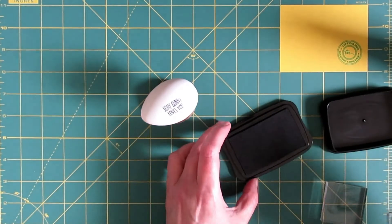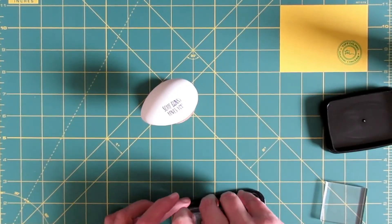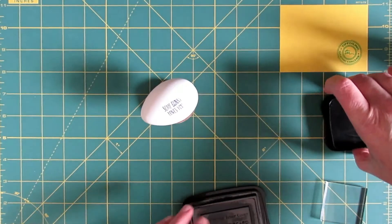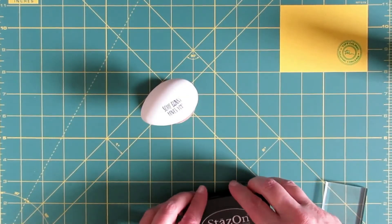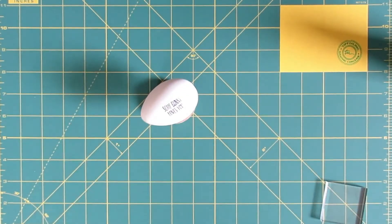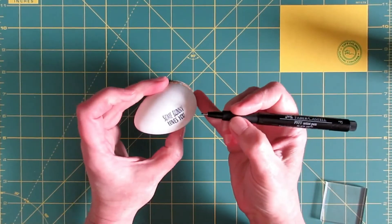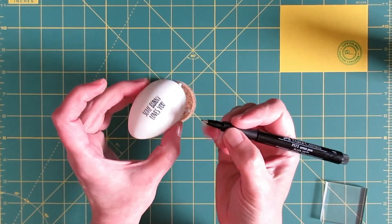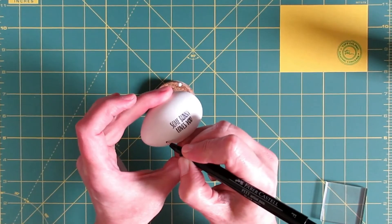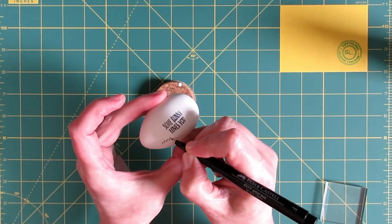If you're using Stazon ink, you shouldn't have to wait very long for the ink to dry. I like to stamp one side of the egg with an image, and then stamp a sentiment on the other side. When all of the stamping is dry, I like to sort of connect the stamped images using my fine line marker. For this egg, I'm adding some grass and clouds. But the possibilities are endless here. You can do whatever you want.